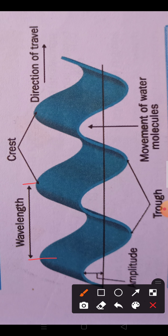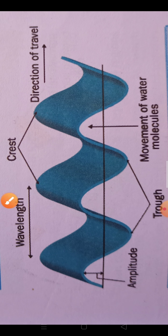The distance between two consecutive crests or two consecutive troughs is known as wavelength. You can find the wavelength from any two consecutive crests or any two consecutive troughs. To summarize: crest is the rise in water; trough is the fall in water; wavelength is the distance between two consecutive crests or troughs; and amplitude is the height which the water attains during a wave, as seen in the diagram.